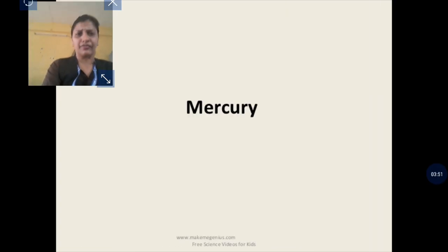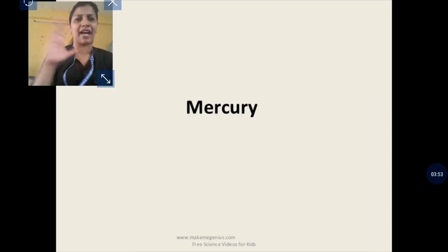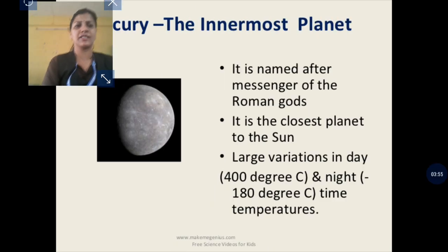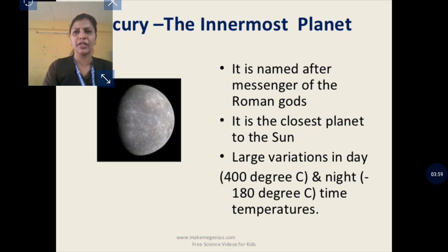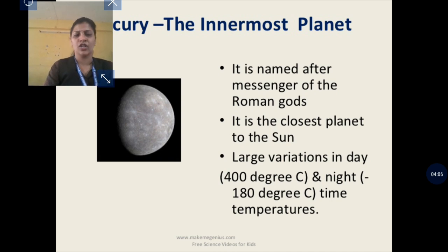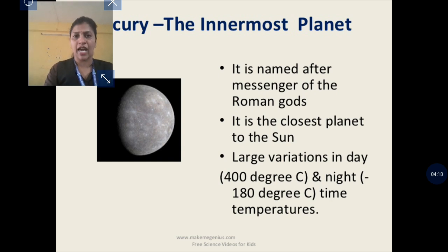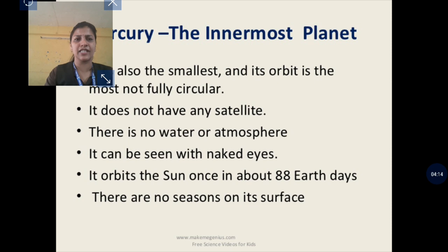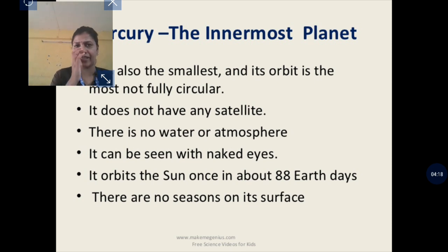The first planet is Mercury. Mercury is the closest to the sun and is the smallest planet. It takes 88 days to complete its revolution and is the fastest moving planet. It can be seen with our naked eyes.